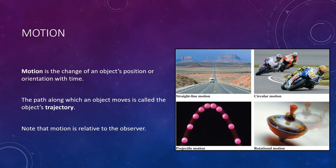The path along which an object moves is called the object's trajectory. The figure on the right shows four basic types of motion that we'll study in this course. In the beginning, we will focus on straight-line motion. In later lectures, we will focus on circular motion, projectile motion, the motion of an object through air, and rotational motion, the spinning of an object about an axis.